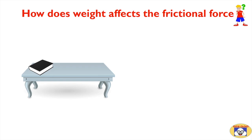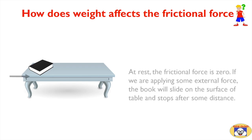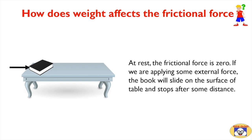Another factor which affects friction is weight. Friction increases if the surfaces push harder against each other. Here is one book which is at rest. The frictional force is zero when the object is at rest. If we apply some external force, the book will slide on the surface of the table and stop after some distance.